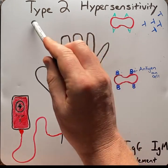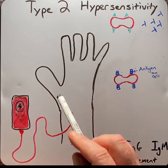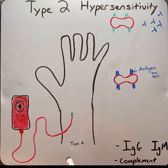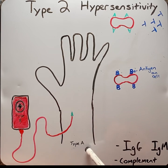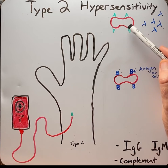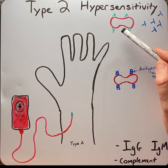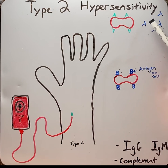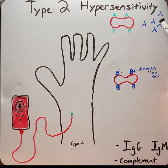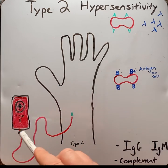The example of a type 2 reaction for today is an incompatible blood donation. This person has type A blood, which means on their red blood cells they have type A antigens, and in their plasma they have anti-B antibodies. When they are given type B blood,